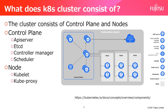What does a Kubernetes cluster consist of? The Kubernetes cluster consists of a control plane and nodes. The control plane manages the worker nodes and the pods in the cluster. The worker nodes host the pods that are the components of the application workloads. The control plane has components such as API server, etcd, controller-manager, scheduler, and cloud-controller-manager. In the nodes, there are components such as kubelet and kube-proxy.